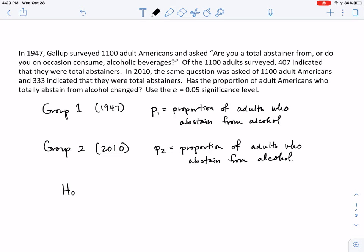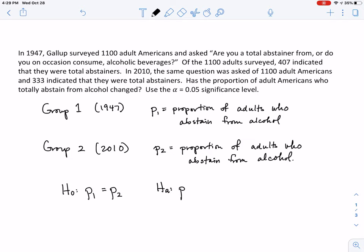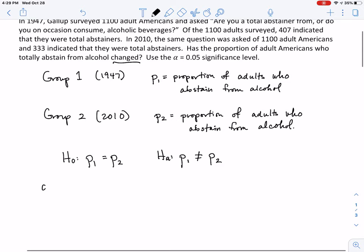So we want to test the null hypothesis is that the proportion for the group in 1947, if there's no difference, these two proportions should be the same. And our alternative is we're testing to see have they changed. So we're not interested in higher or lower, but just different. So these are our two hypotheses.